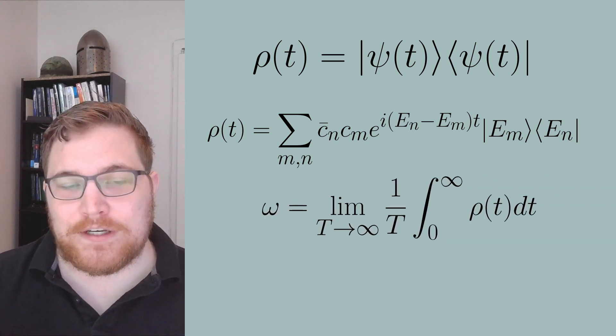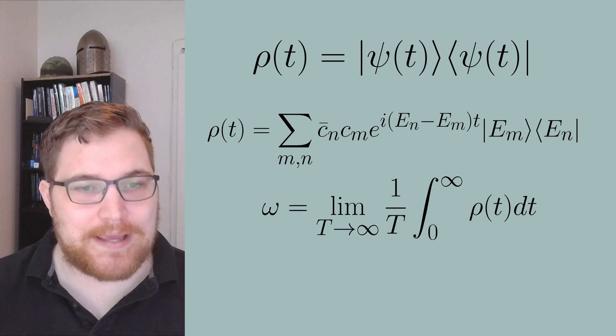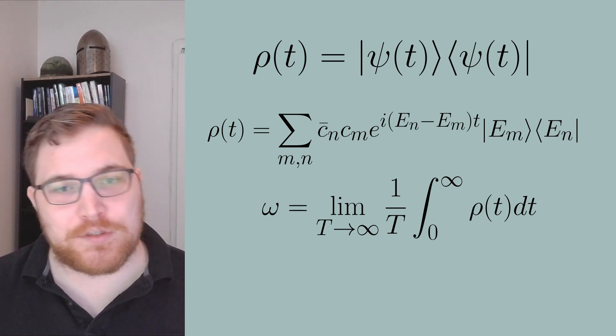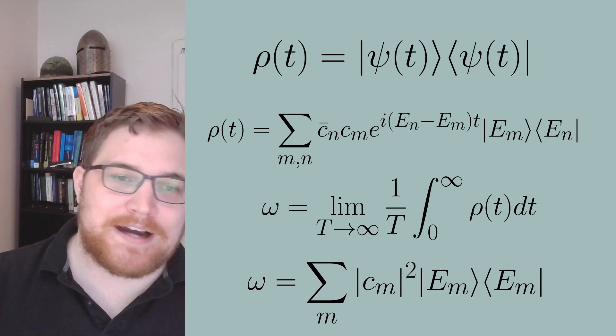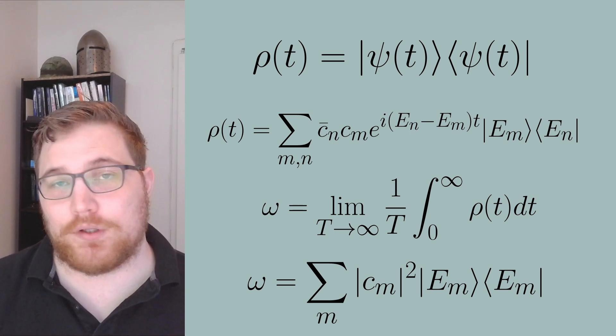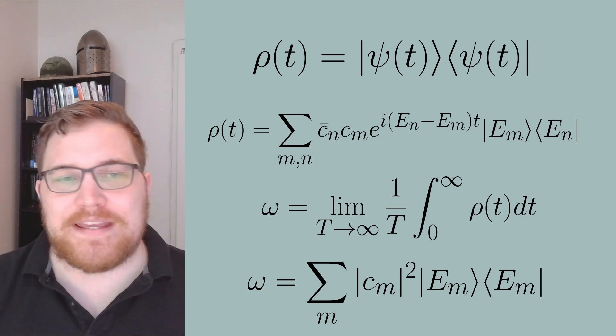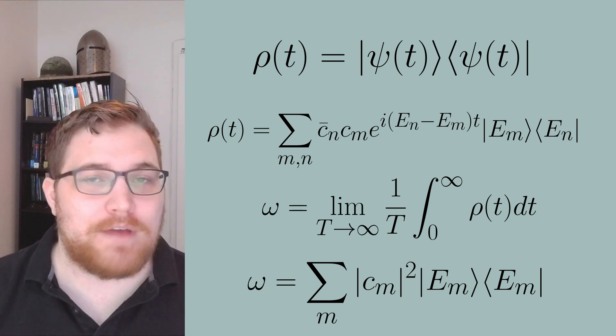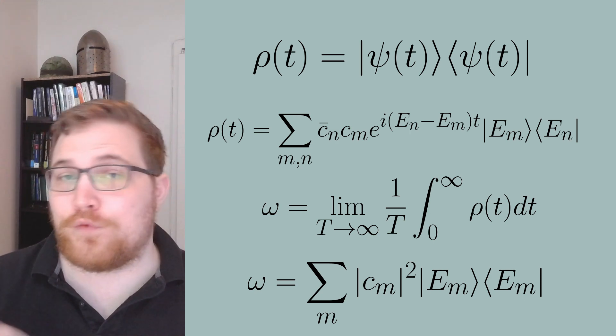So if we define the infinite time average state omega, the only terms that are independent of time are those on the diagonal, so when m is equal to n, and we get the following expression for the infinite time average state. So this is a mixed state that we call the diagonal ensemble, which gives us the infinite time expectation value of our observables.